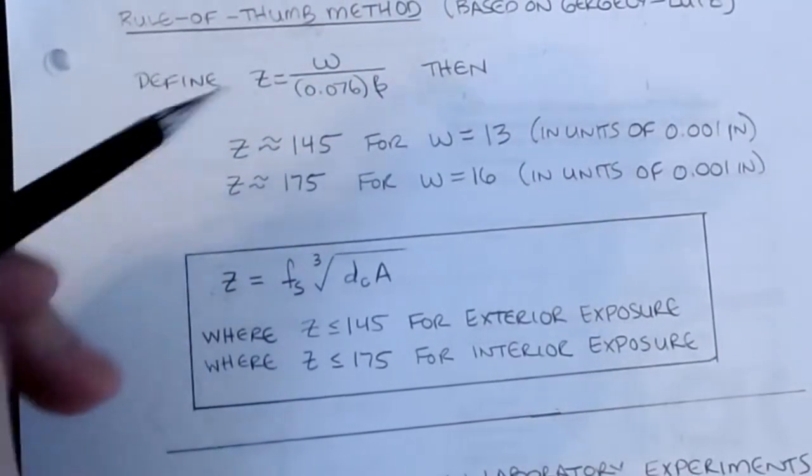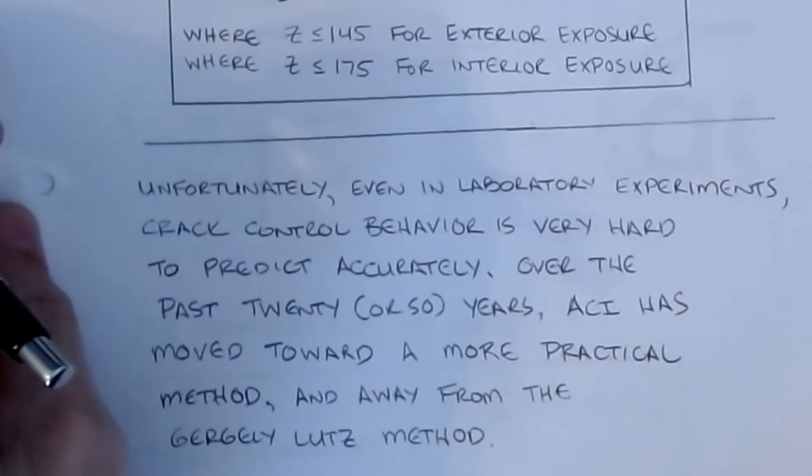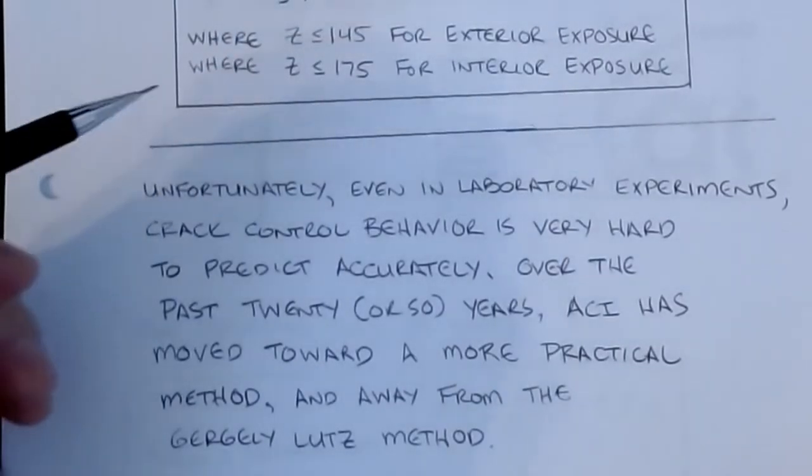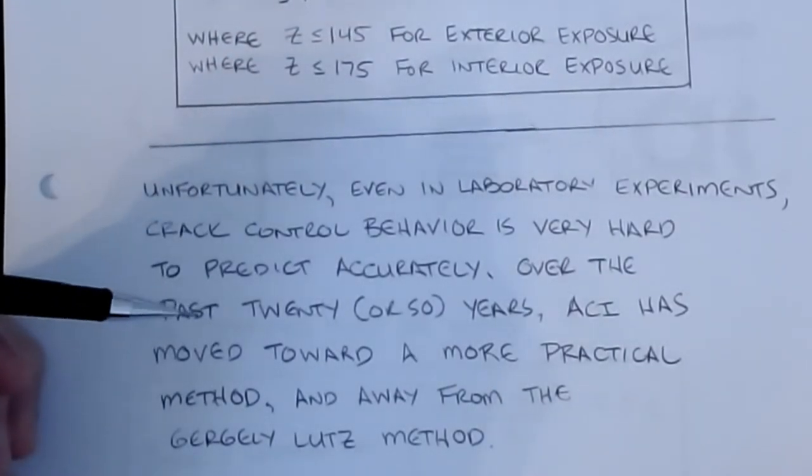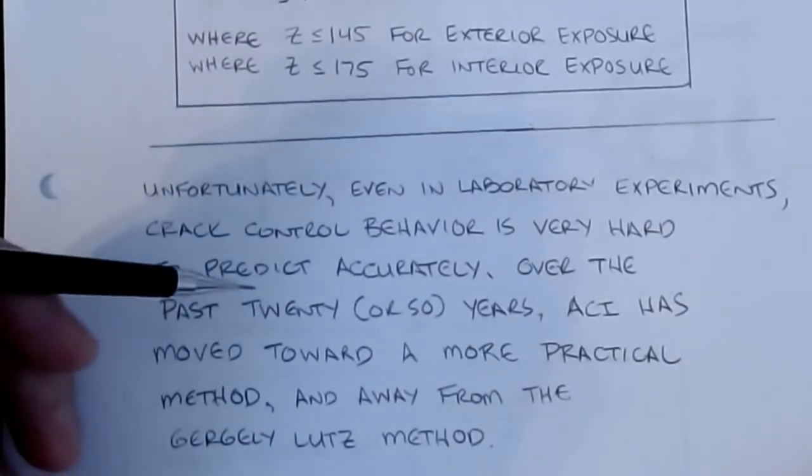That sets our Z parameter, and then all it is, is it's just simply a check of the distribution of the steel that you have. We take our DC for the layout that we choose, we compute the A for the layout that we choose, we have our Fs, and then that's our equation for calculating Z, it's very easy, very straightforward. Now, one of the problems that we have in this is that this looks like it's a well-defined formula, but it's hard to reproduce these results in a lab, and part of that is because that even in laboratory experiments, it's crack control characteristic is very hard to predict accurately.